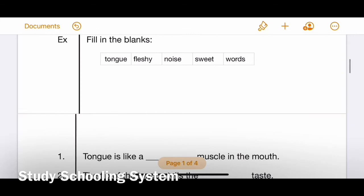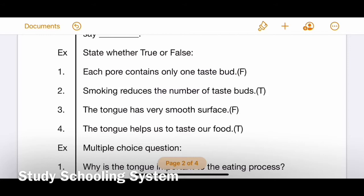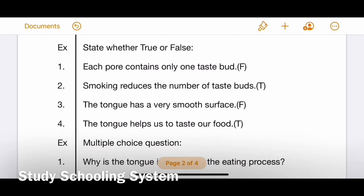Now exercise: state whether true or false. Number one: Each pore contains only one taste bud. No, of course not. There are many, there are four. This is false. Number two: Smoking reduces the number of taste buds. True, people who smoke lose their taste buds over time. Number three: The tongue has a very smooth surface. False, we have bumps and stuff on our tongue. Number four: The tongue helps us taste our food. True, we have taste buds for that.